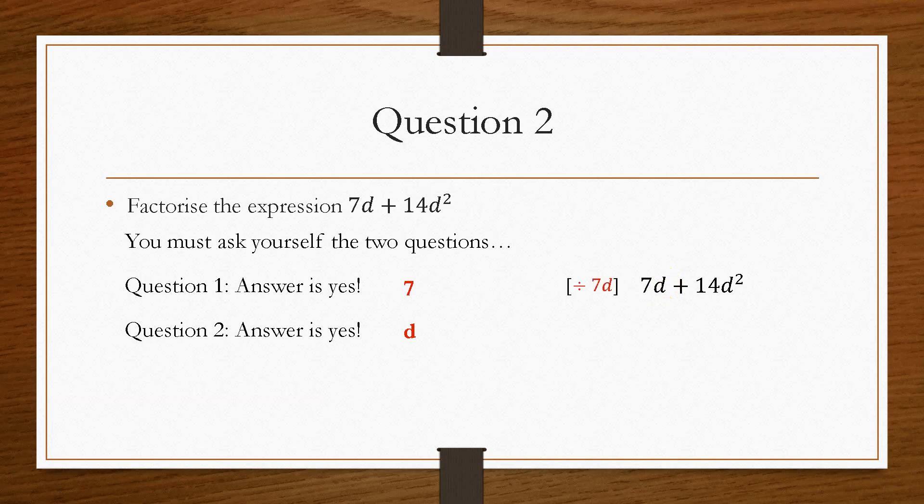So that means that our highest common factor is 7d—it's both of these, because both the 7 and the d is common to both. So again, you now divide each term individually by the highest common factor. So 7d divided by 7d would be 1, 14 divided by 7 is 2, and then d squared divided by d, when you divide the numbers, you take the indices away. So that would be 2 take away 1, which will give you just d.